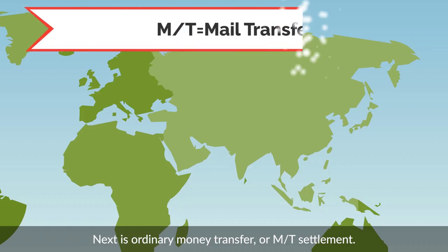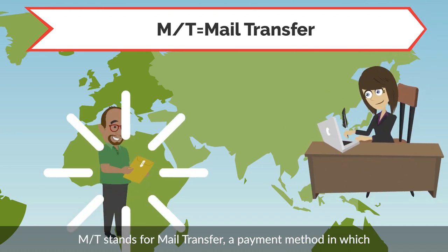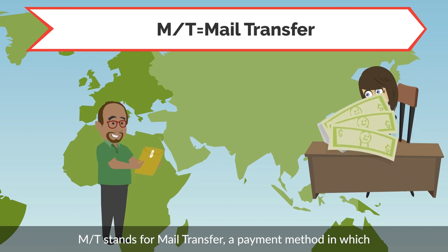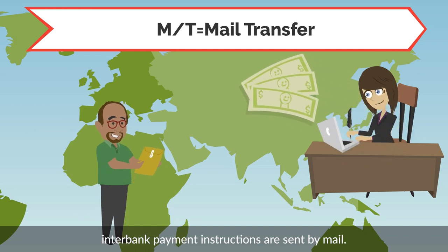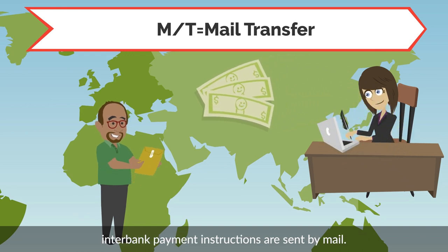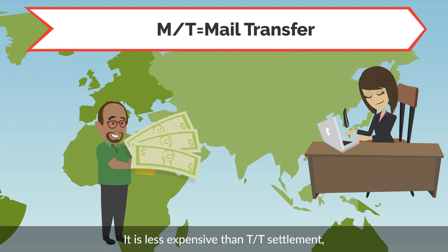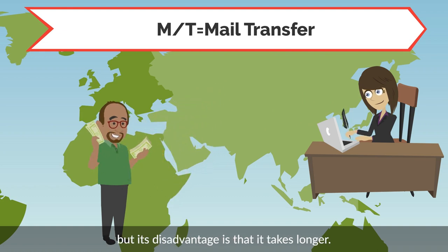Next is Ordinary Money Transfer, or MT Settlement. MT stands for mail transfer, a payment method in which interbank payment instructions are sent by mail. It is less expensive than TT Settlement, but its disadvantage is that it takes longer.